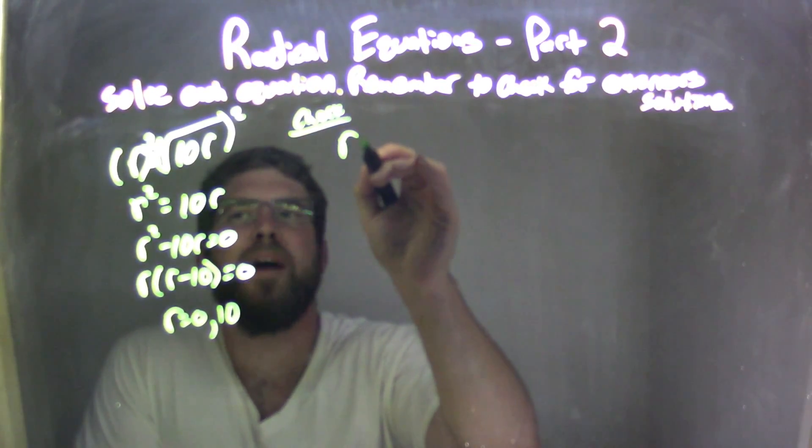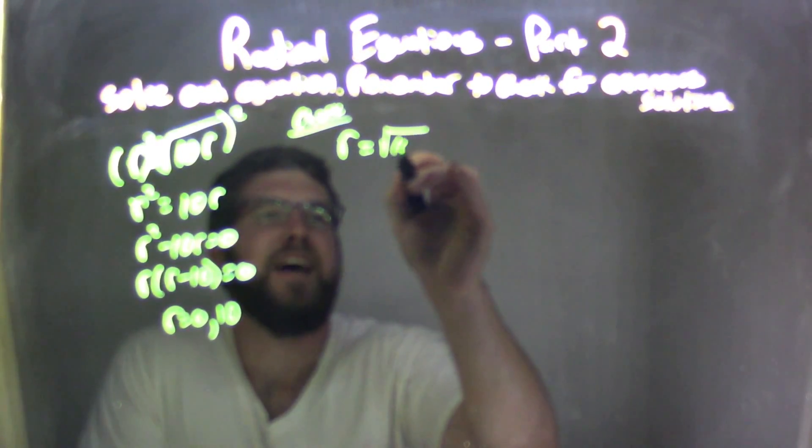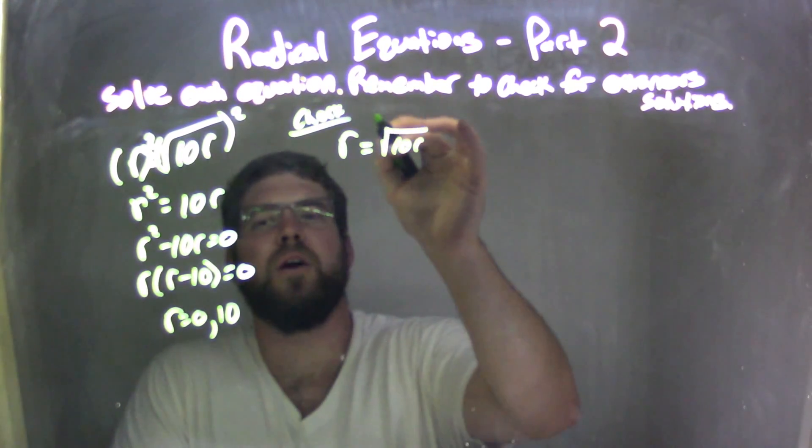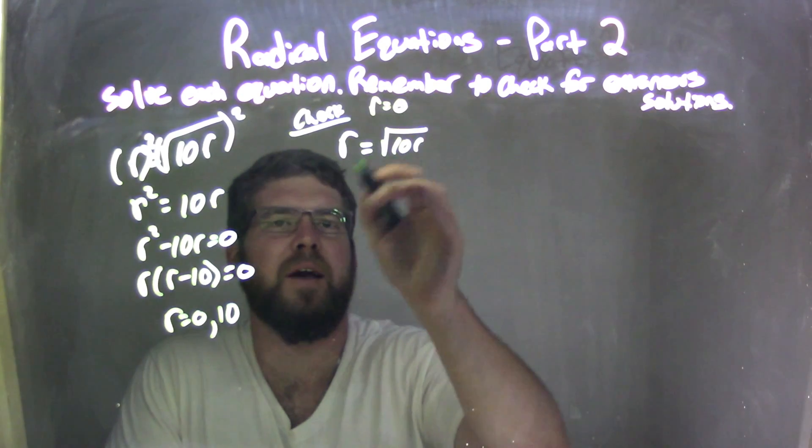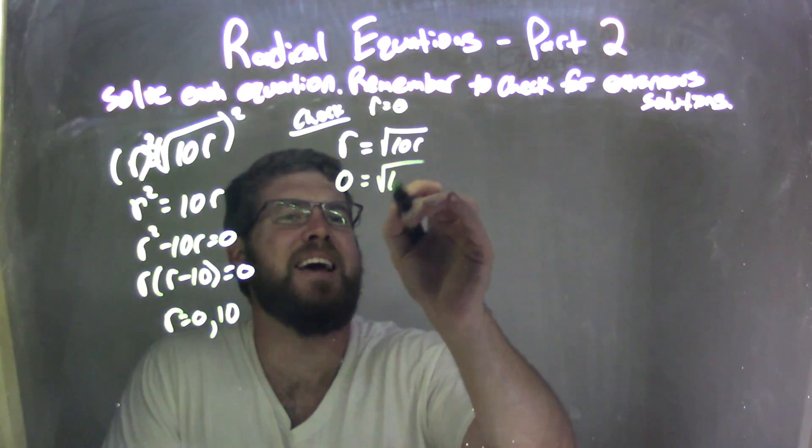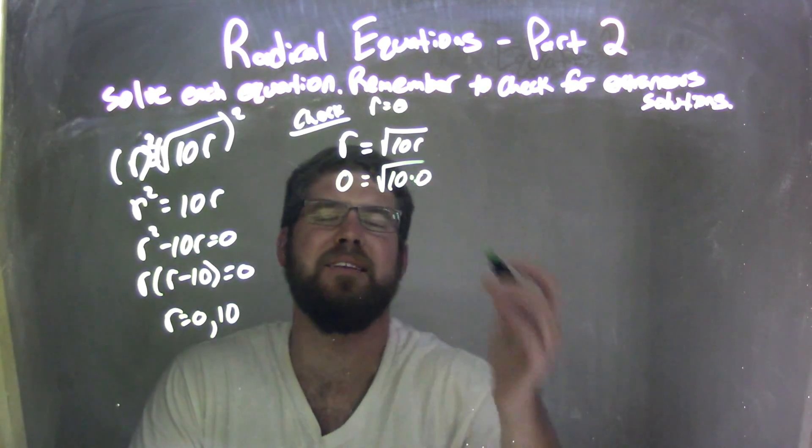All right, check. So let's rewrite our equation, r equals square root of 10r. We're going to plug r equals 0 in. 0 equals square root of 10 times 0. What's 10 times 0?